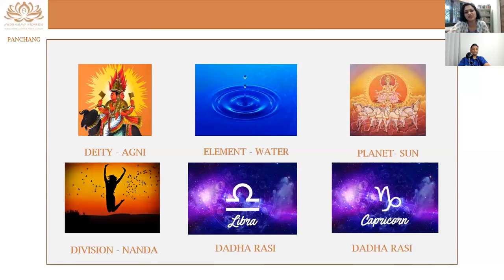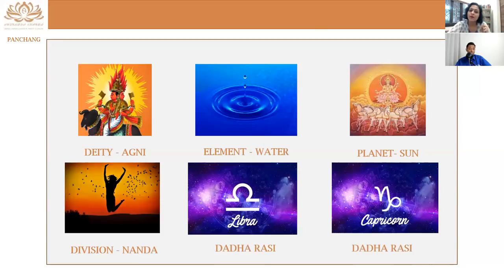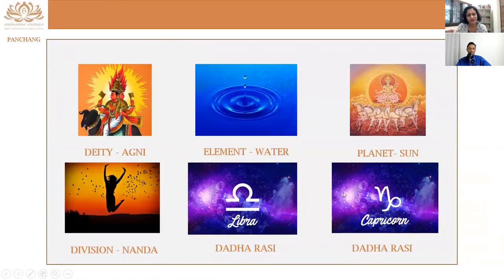Dagdha Rasis — that's a very interesting concept because we have covered deities in Nakshatras, and we know what elements and planets are. Dagdha Rasis are a new concept here. Dagdha means something that is hurting you, that is burning. Anything that burns in your chart — that is the area which causes much grief. Dagdha Rasis are an area that could be a pulsating area that needs rectification, an area that causes much grief, or an area that you would be required to improvise upon.